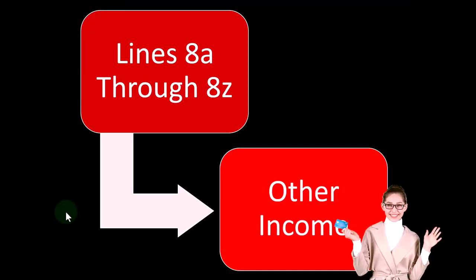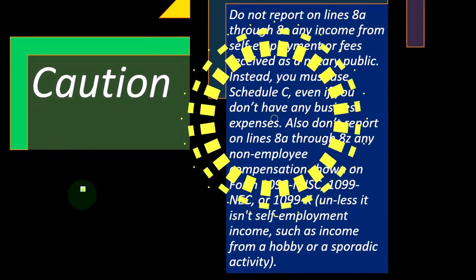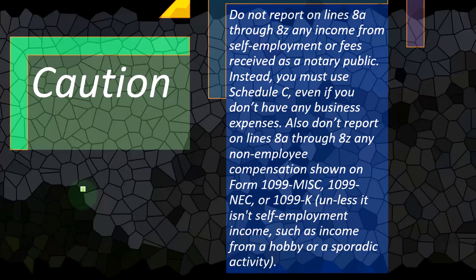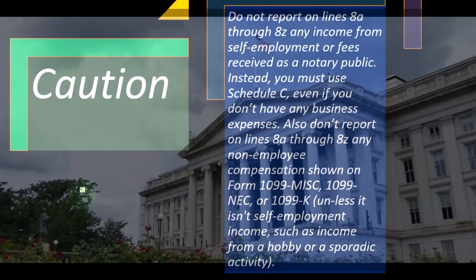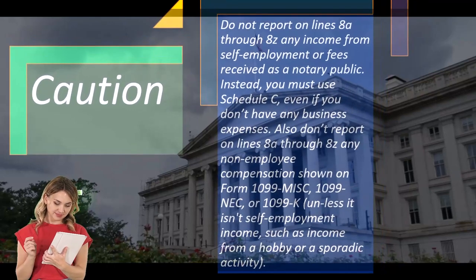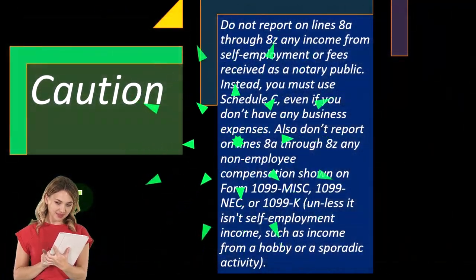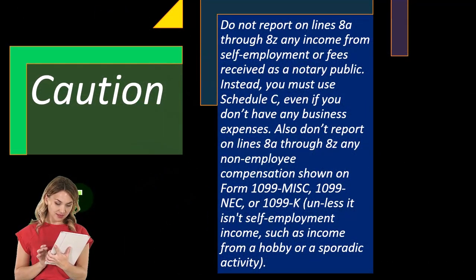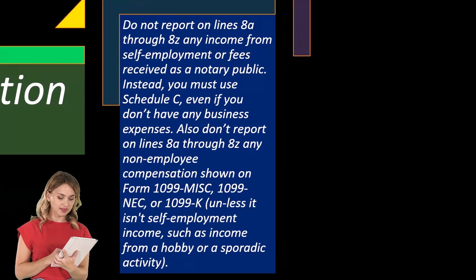Lines 8A through 8Z are the other income lines. The general rule from the IRS perspective is that everything you receive is essentially income, unless it's exempt from income or classified as not income. So you can get very creative asking what if this happened or that happened — those might fall into this other income line. So, caution: